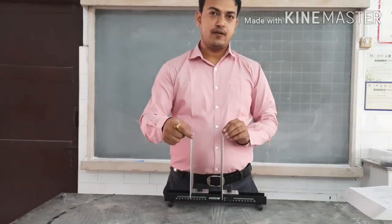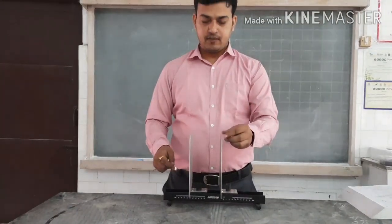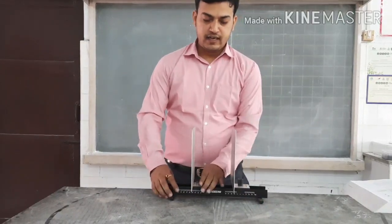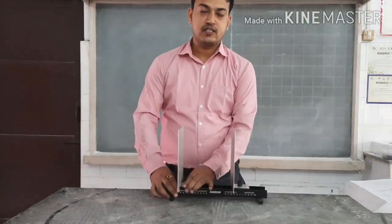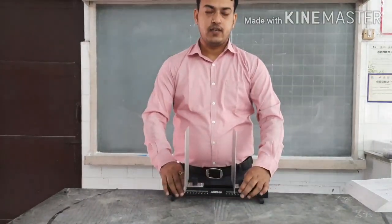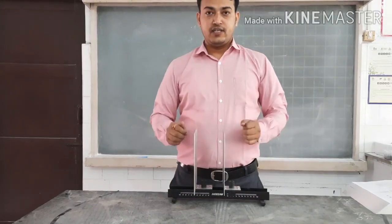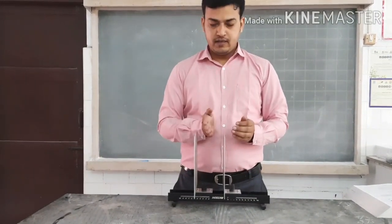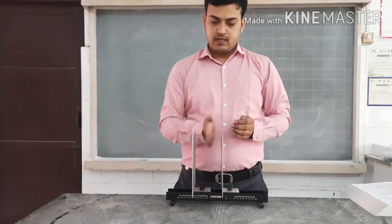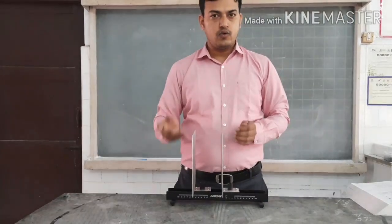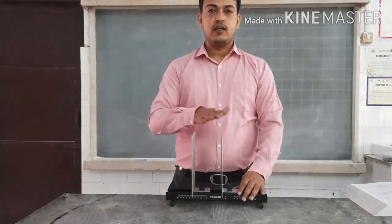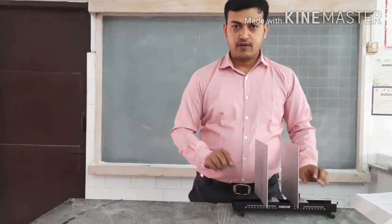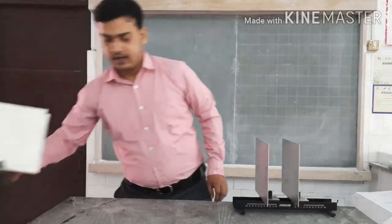Here is a simple setup of a capacitor. We have one metallic plate and another metallic plate, and these two are movable, meaning I can change the separation between them. As per the definition, if I separate two conductors by an insulator — and air also works as an insulator — this constitutes a capacitor.